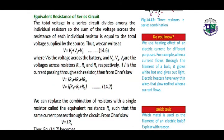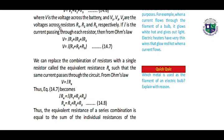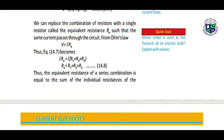Equivalent resistance of series circuit. The total voltage in a series circuit divides among the individual resistors: V equals V1 plus V2 plus V3. The sum of the voltages across each individual resistor is equal to the total voltage V, where V is the voltage across the battery and V1, V2, V3 are the voltages across resistors R1, R2, and R3 respectively. If I is the current passing through each resistor, then according to Ohm's law: V equals IR1 plus IR2 plus IR3.